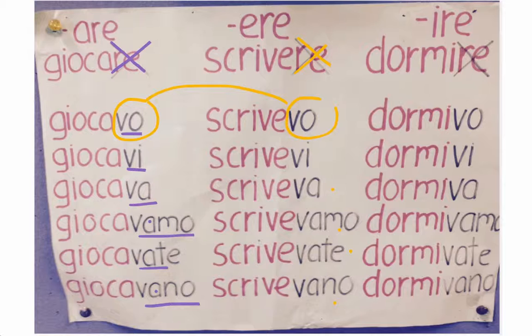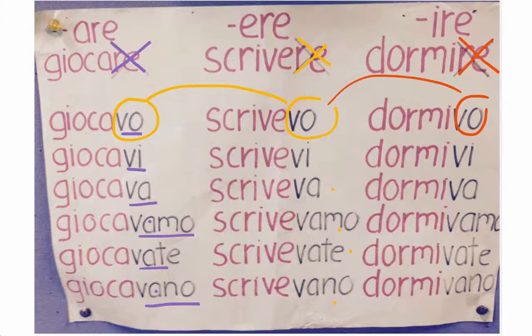DORMIRE — once again, we're getting rid of the last RE, and we're left with DORMI. The endings are identical: VO, VI, VA, VAMO, VATE, VANO. So: DORMIVO, DORMIVI, DORMIVA, DORMIVAMO, DORMIVATE, DORMIVANO.